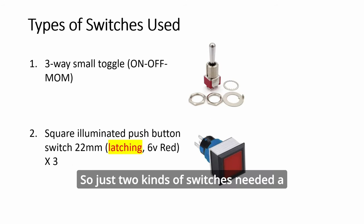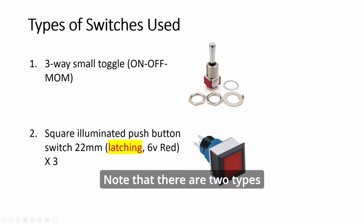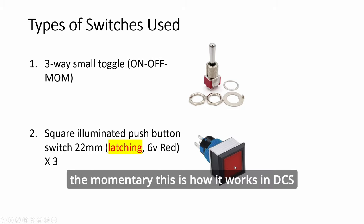So just two kinds of switches needed. A big toggle and this kind of light. Note that there are two types. You want this to be the latching type, not the momentary. This is how it works in DCS.